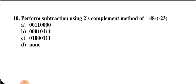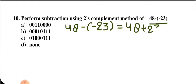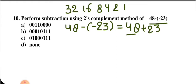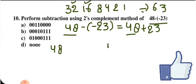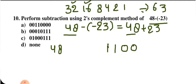Subtraction using 2's complement: 48 minus (minus 23). Observe that this can be written as 48 plus 23. So we don't need to take 2's complement. Converting to binary: 48 is 00110000 and 23 requires 16 + 4 + 2 + 1, so 23 is 00010111.